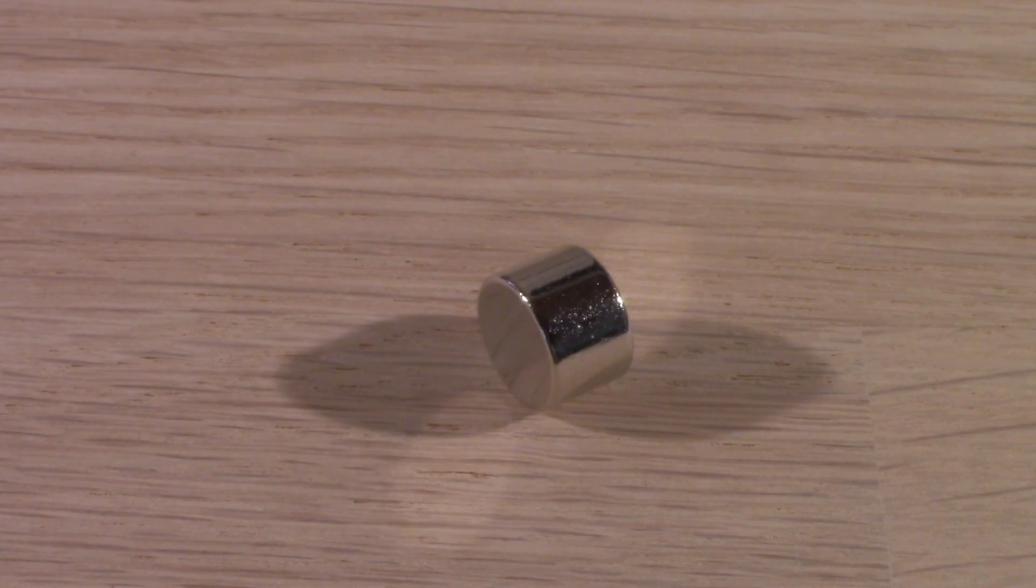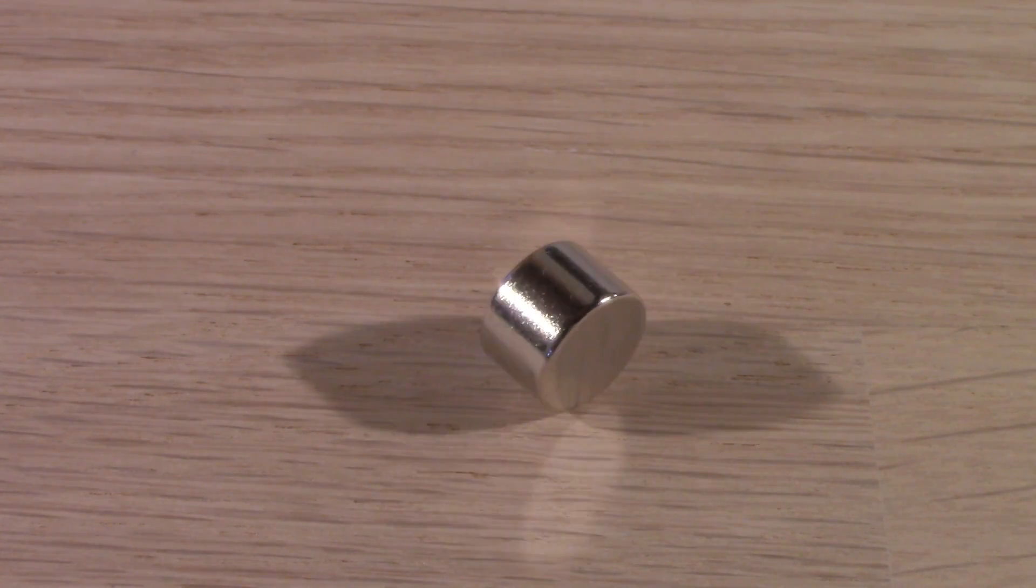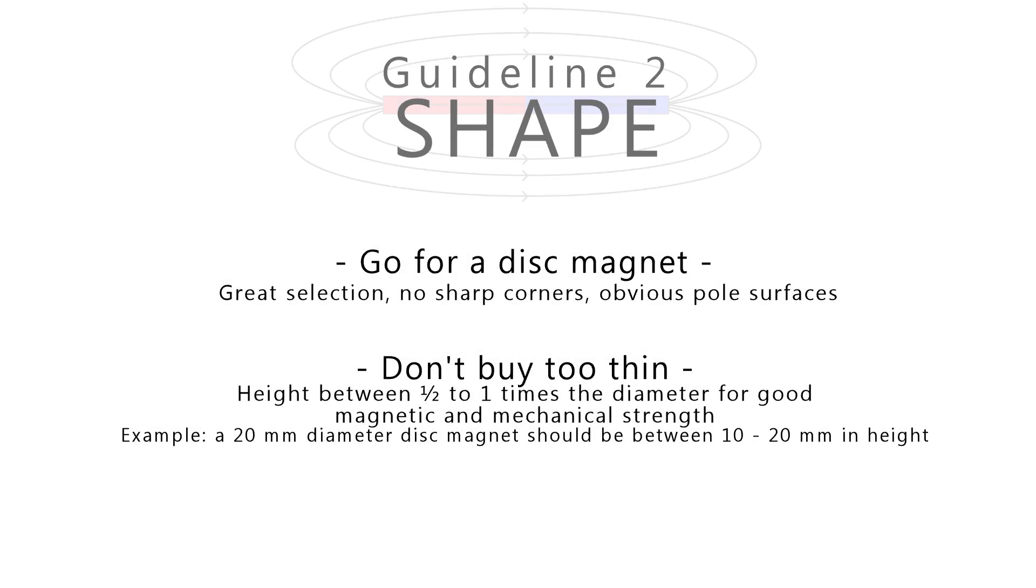Therefore my recommendation goes to the disc magnet as the best shape for a beginner. No sharp corners. Poles are easy to spot and it is a very common shape with a lot of sizes to choose from. Perfect!